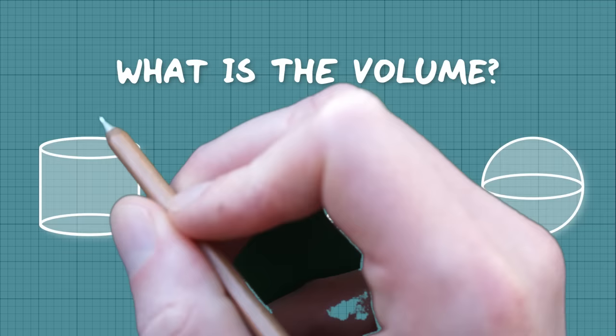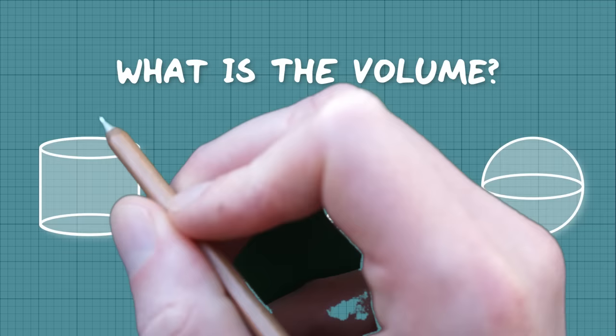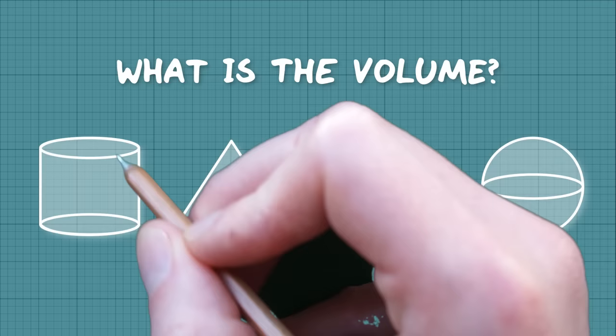Maybe for the cylinder because that's just the base times the height. You know the base is pi r squared, just the area of a circle, times by the height.